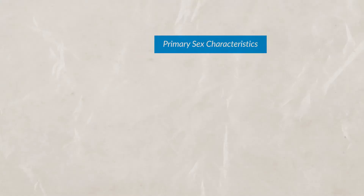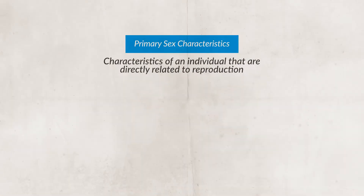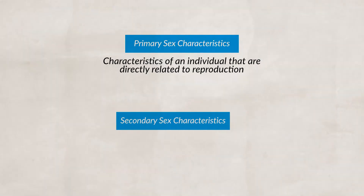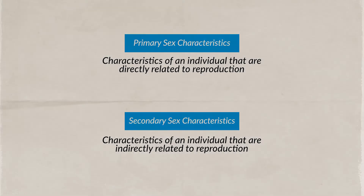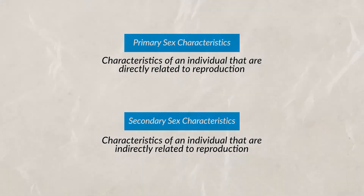Oftentimes, people confuse the terms gender and sex. These two terms are pretty similar but are different. A person's sex refers to the biological differences between males and females — these are anatomical differences. We can see that there are primary sex characteristics, which are directly related to reproduction, and secondary sex characteristics, which are indirectly related to reproduction — for example, men having broader shoulders and women having less facial hair. Gender, on the other hand, refers to the social, physical, and behavioral traits considered normal for men or women. Gender is the social and cultural differences between females and males — essentially, gender is the learned aspects of our sex.